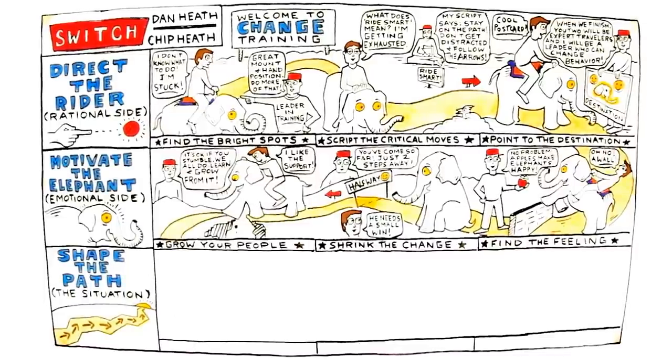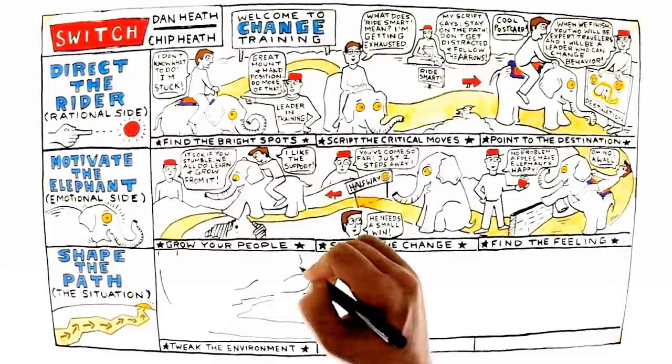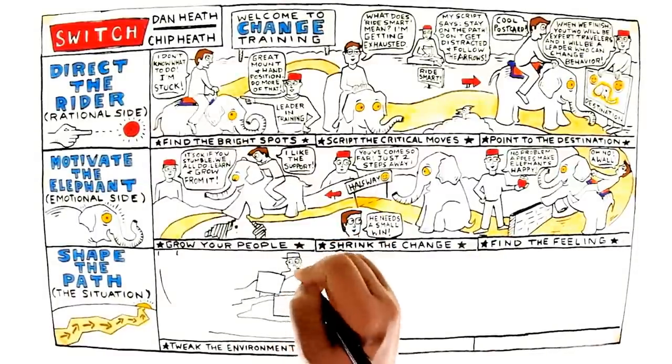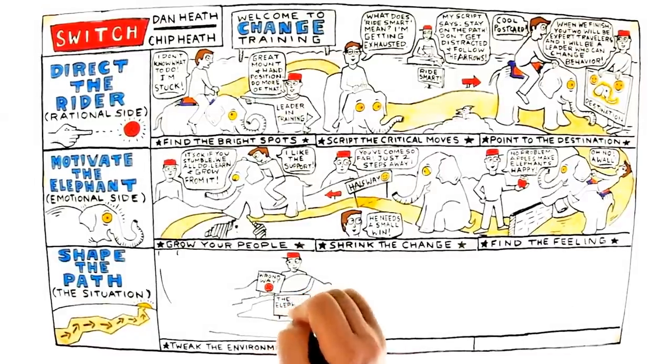Shape the path. Tweak the environment. Leaders can help people make changes by providing clear direction, helping the rider, or boosting their motivation, helping the elephant.